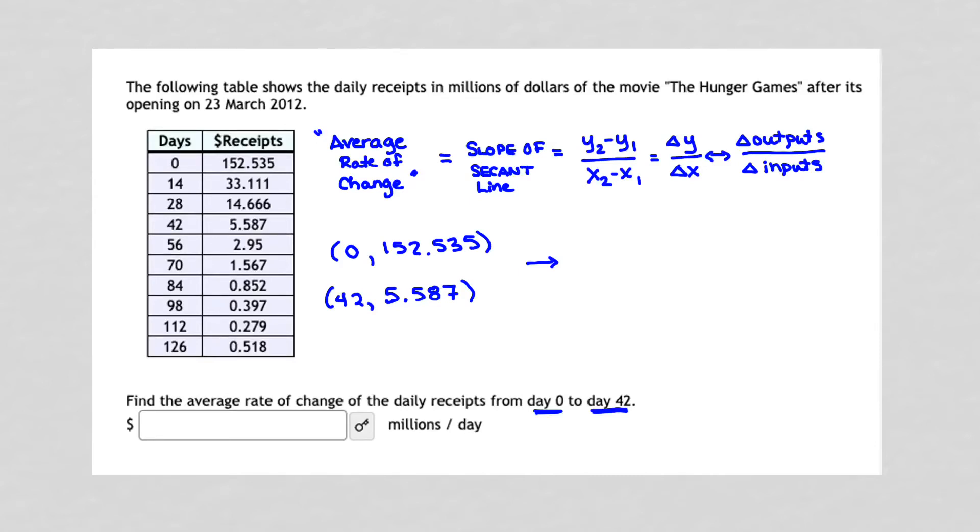So we get 5.587 and we're going to take away 152.535. Those are my y values and then I'm going to subtract my x values, 42 minus 0. So that tells me using a calculator that our average rate of change for daily receipts was negative 3.498761905 millions of dollars per day.